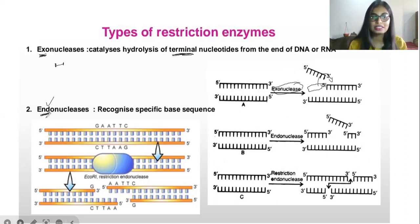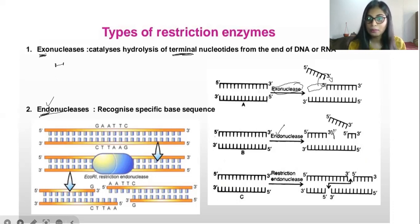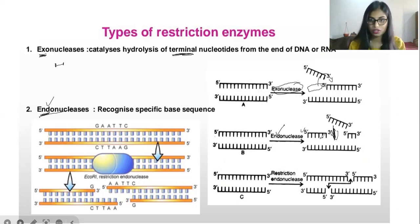Endonucleases recognize the specific base sequence in the middle. You can see the DNA sequence — when endonucleases act, they cleave in the middle, not at the end, not at the terminal. They cleave at a specific base sequence in the middle of the sequence. Restriction endonucleases cleave at specific sequences that is in the middle, not at the terminal.